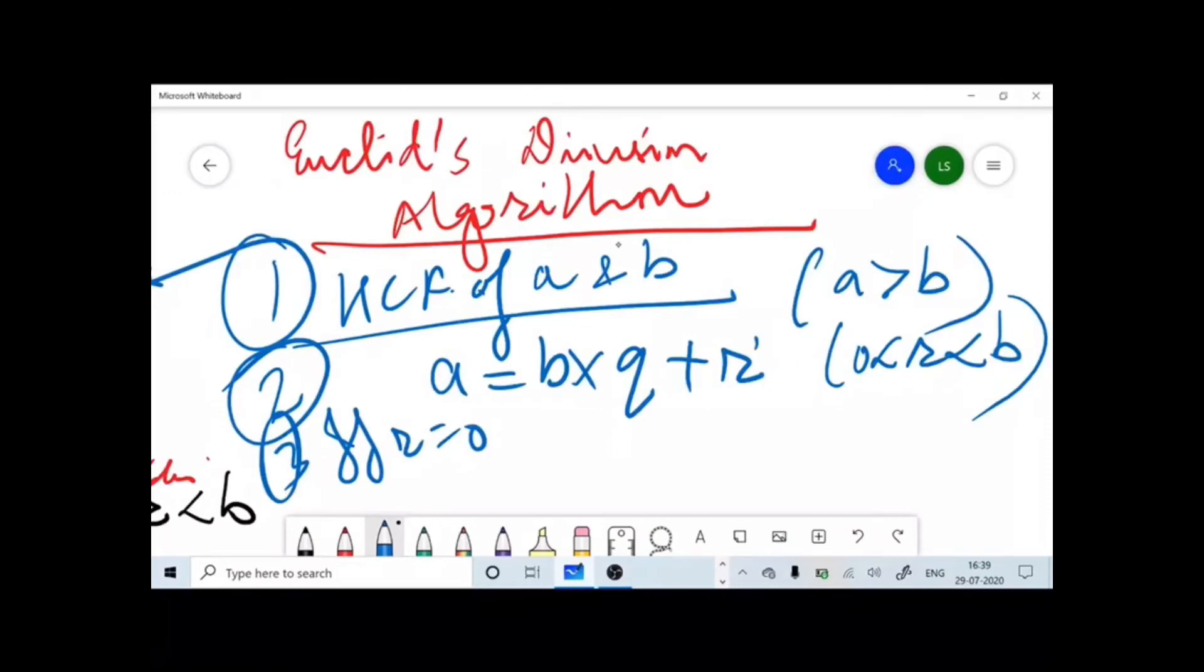We apply this Euclid's division lemma to the divisor and the remainder to get another pair of quotient and remainder. The purpose over here is very clear. The above method is repeated until a remainder of 0 is obtained. The divisor in that step is the HCF of the given set of numbers. This has to continue till we get the remainder as 0.